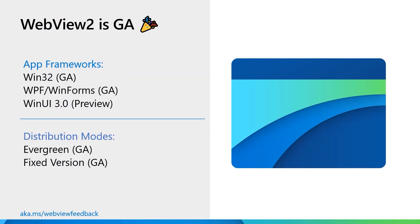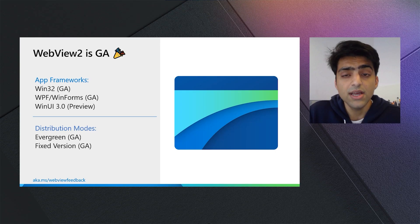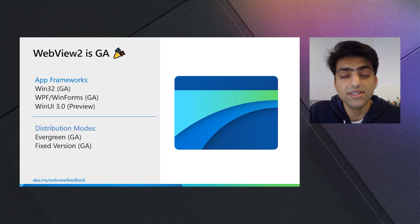As I mentioned earlier, WebView2 is officially GA. WebView2 is GA for Win32 developers, .NET developers using WinForms and WPF, and is currently in preview with WinUI 3.0, and will GA with WinUI 3.0 later this year. Both distribution modes — the evergreen and fixed distribution modes — are also now GA. So now is the time to start building and deploying WebView2 applications. And along the way, if you get stuck or have any questions, please connect with us on our feedback repo link below.